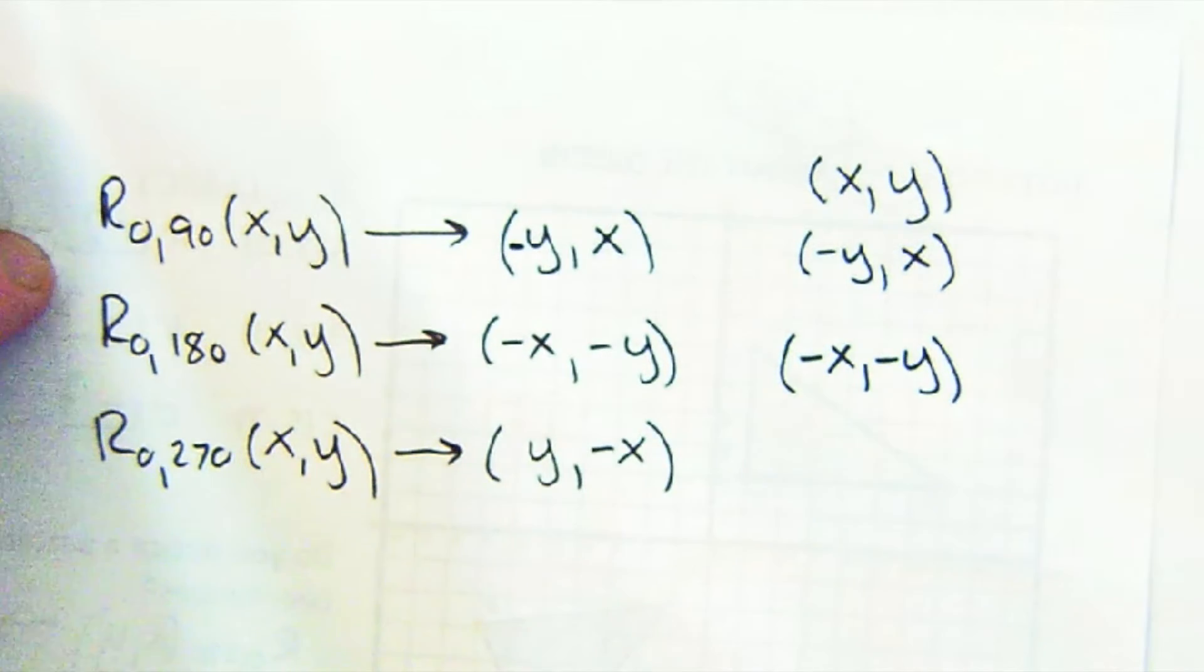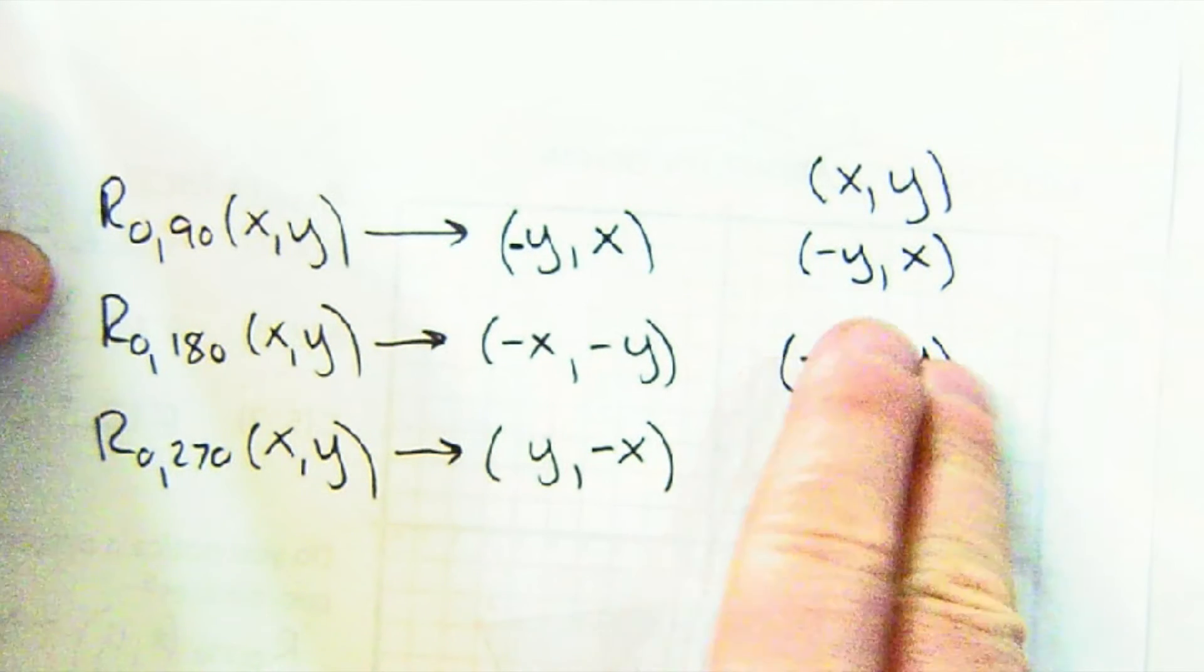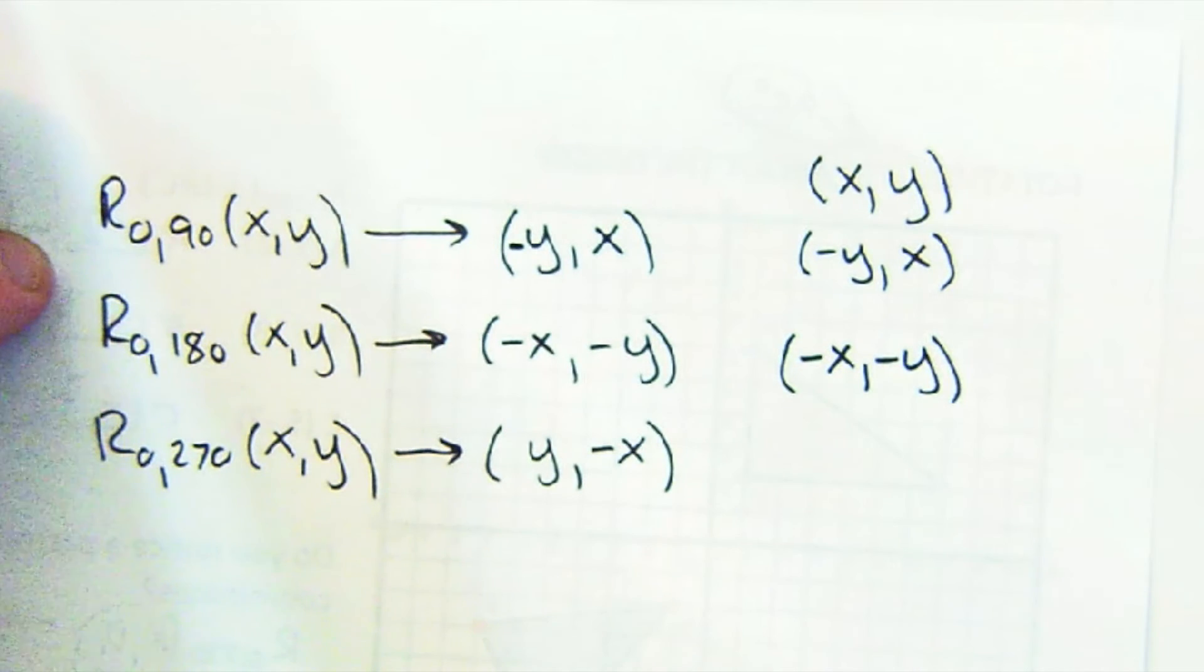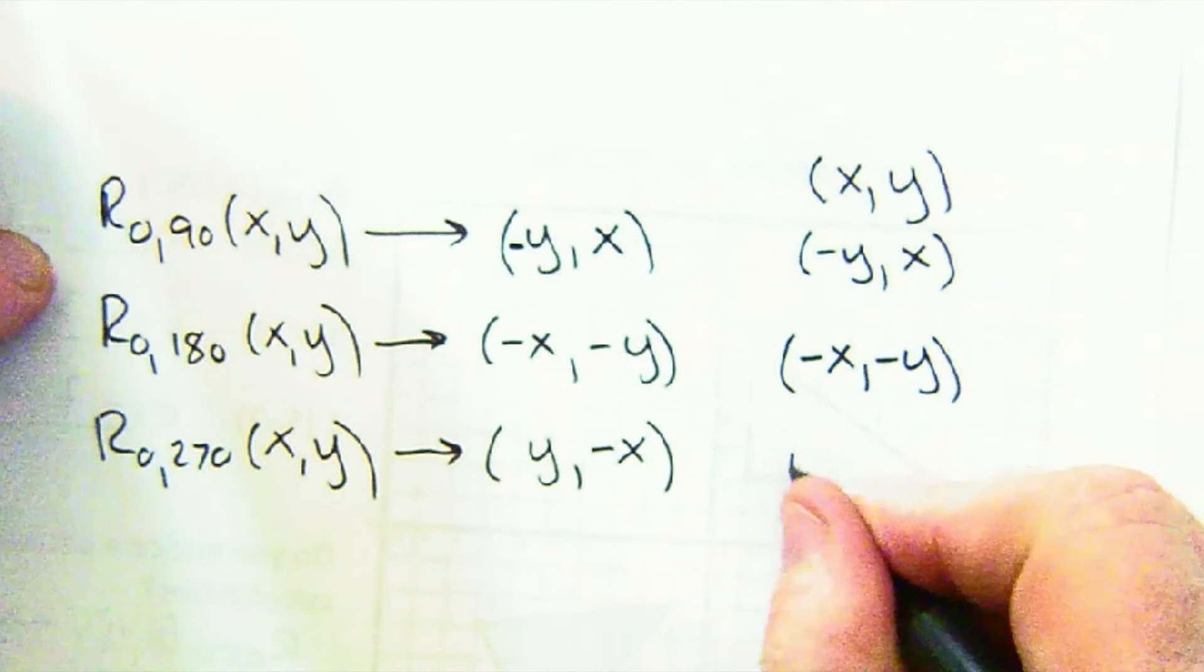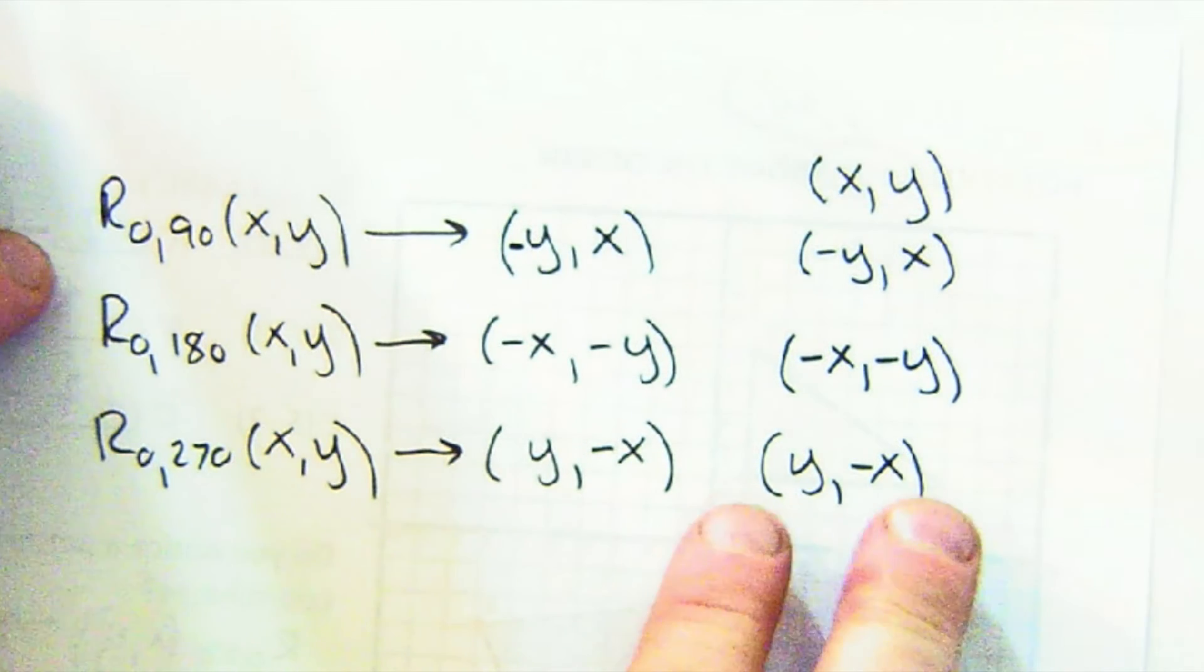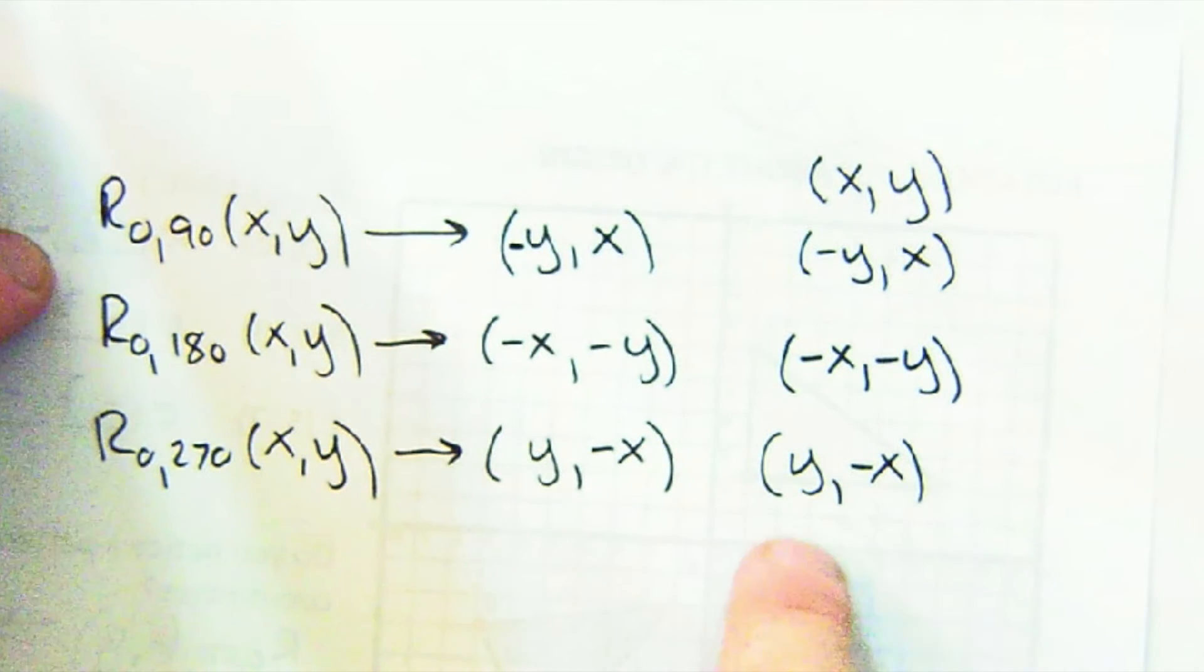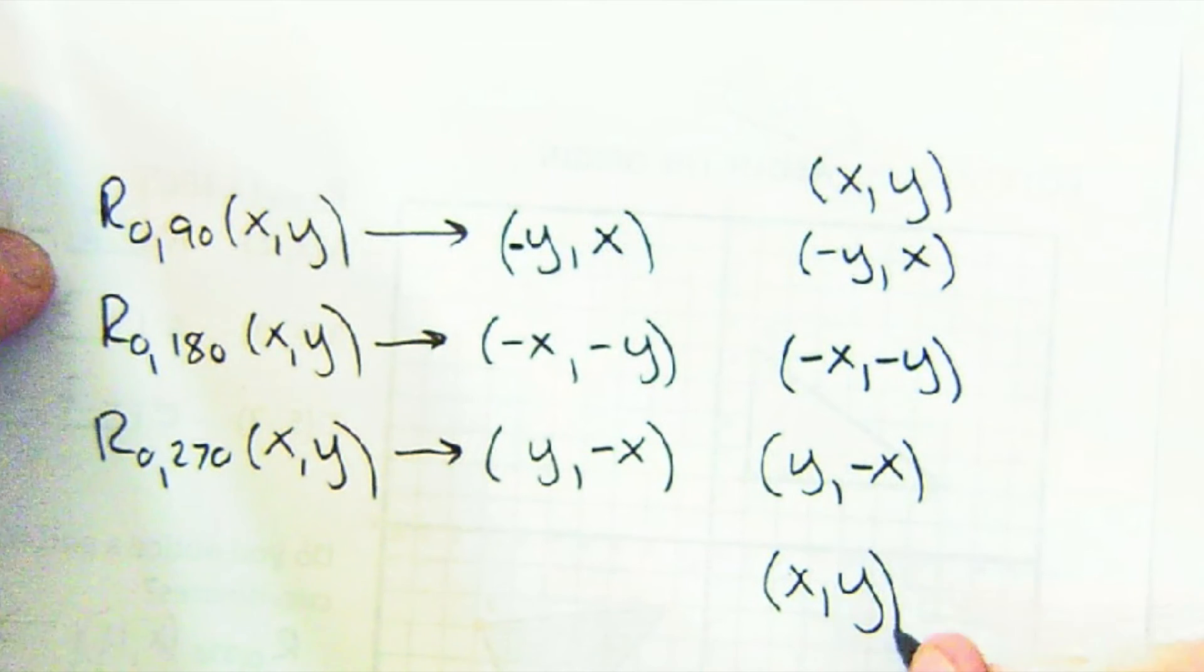One more time. If we go from 180 to 270, if we switch and negate again, guess what we get? We get the value here. Let's do it one more time and see what happens. If we go another time, we switch and negate and negate, and guess what? We arrive right back where we started.